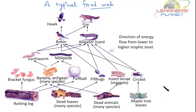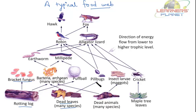There is a rotting log which is actually eaten by bracket fungus. Dead leaves are eaten by bacteria, archaea and many species. Even dead animals are eaten by bacteria, archaea and many species. Rotting logs can also be eaten by bacteria. Puffball or bacteria are eaten by millipede or earthworm. Then millipede or earthworm can be eaten by robin or alligator lizard. Pill bugs, insect larva or cricket can be eaten by alligator lizard or robin too. Robin and alligator lizard can be eaten by fox, and robin can also be eaten by hawk, but hawk cannot eat alligator lizard.